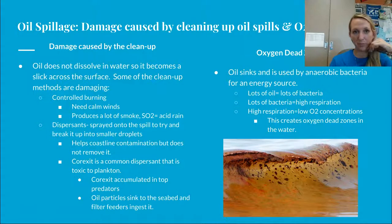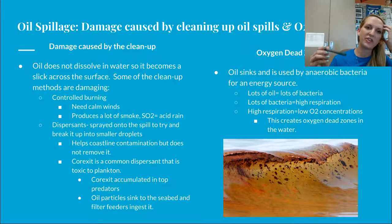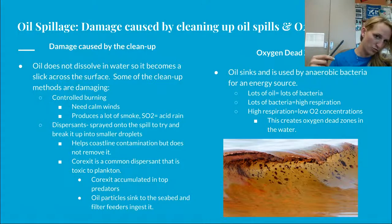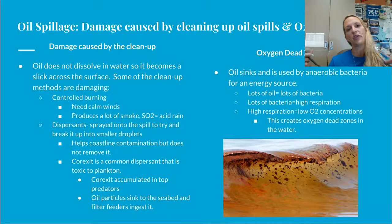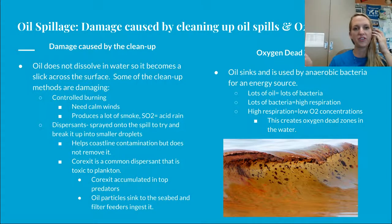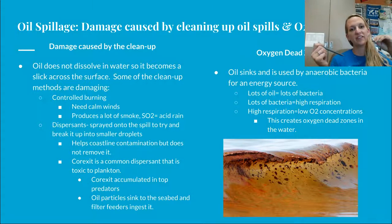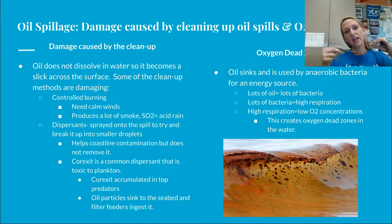Damage is also caused by cleanup methods. Oil does not dissolve in water so it forms a slick across the surface. Burning the oil requires calm winds and produces a lot of smoke and sulfur dioxide, which contributes to acid rain. Dispersants like Corexit are sprayed onto the spill to break it up into smaller droplets — helping with coastline contamination but not removing the oil. Corexit is very toxic to plankton and will accumulate in top predators, while oil particles sink to the seabed where filter feeders digest them.